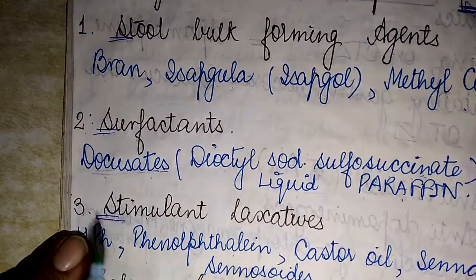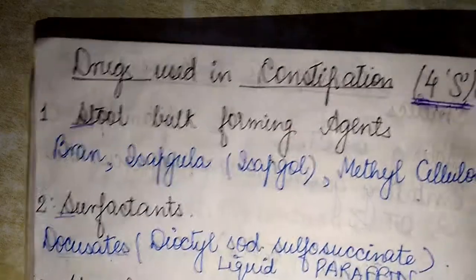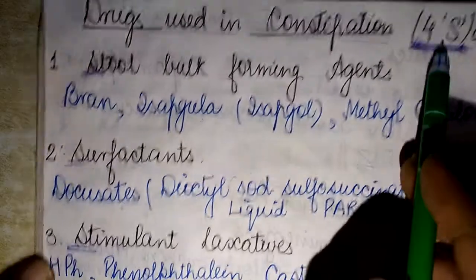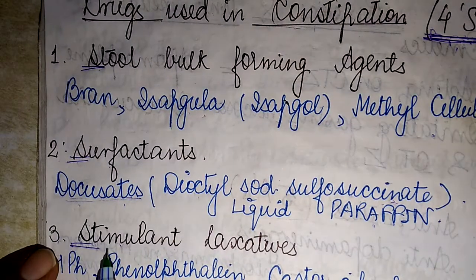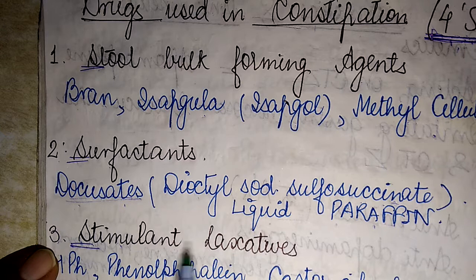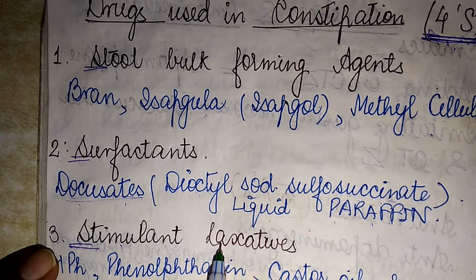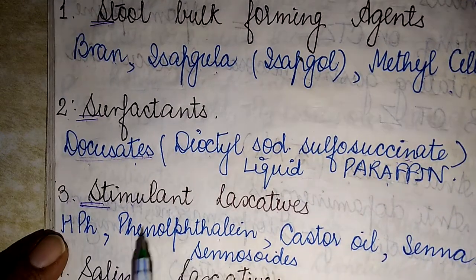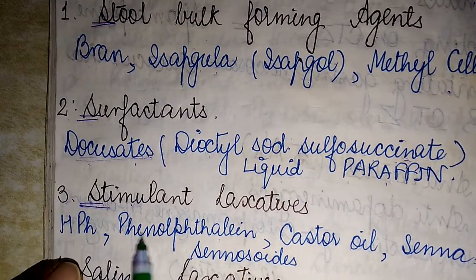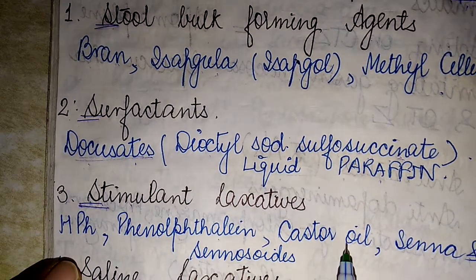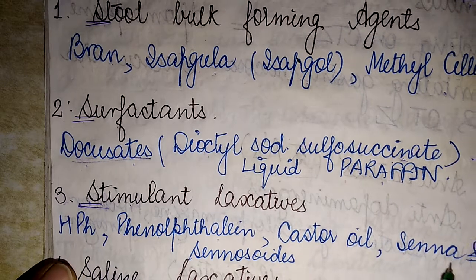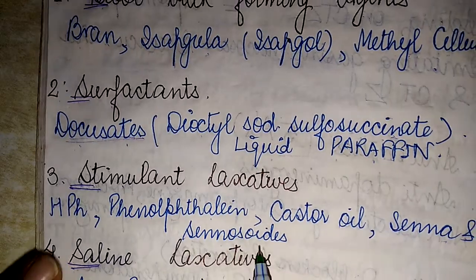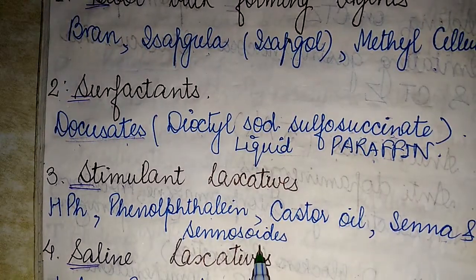The third S out of the 4S includes the stimulant laxatives, which comprises of phenolphthalein, castor oil, senna, and sennosides.